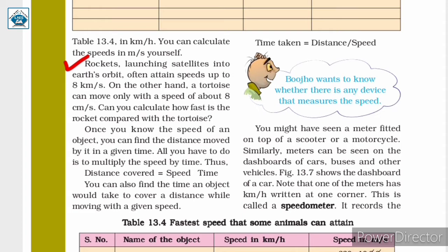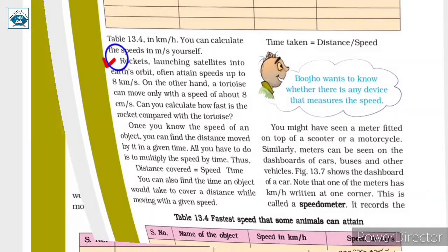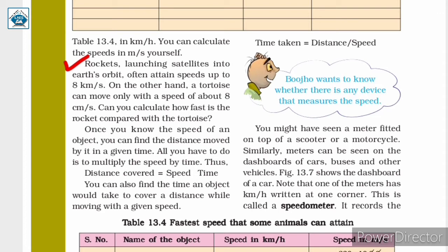Rockets launching satellites into Earth's orbit often attain speeds up to 8 kilometers per second, meaning they cover 8 kilometers every second. On the other hand, a tortoise can move only about 8 centimeters per second. If we convert the rocket's speed to the same unit as the tortoise's speed, we can calculate and compare how much faster the rocket is compared to the tortoise.